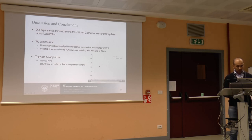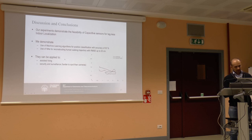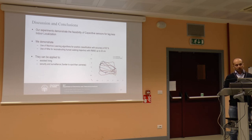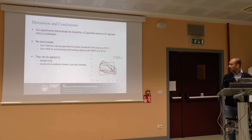That concludes the presentation. The blue line is the inferred trajectory and the red is the actual trajectory. We demonstrated that these capacitive sensors can classify between different positions and can reconstruct the trajectory of a person's movements with approximately 25 centimeters RMSE. Thank you.